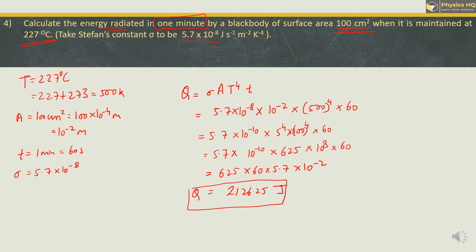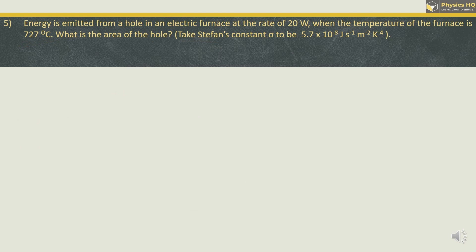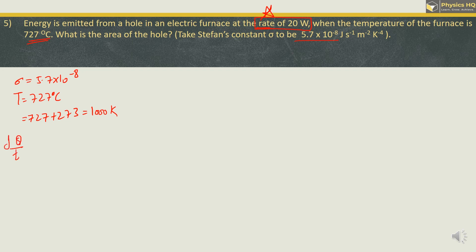Next: Energy is emitted by a hole in an electric furnace at the rate of 20 W when the temperature is 727°C. What is the area of the hole? Given σ = 5.7 × 10⁻⁸, T = 727 + 273 = 1000 K. Rate of energy flow is power: dQ/dt = 20 W. The formula becomes dQ/dt = σAT⁴, so A = (dQ/dt) / (σT⁴).